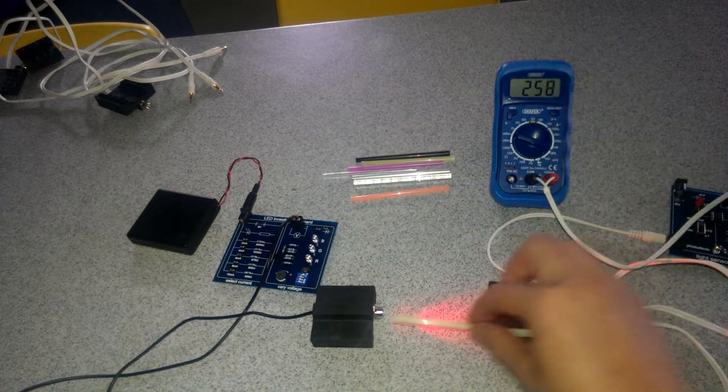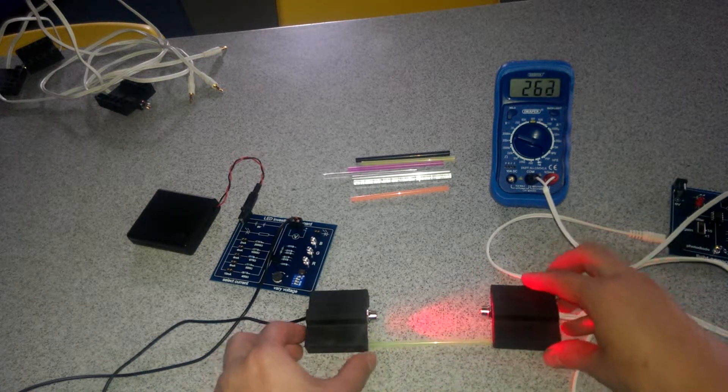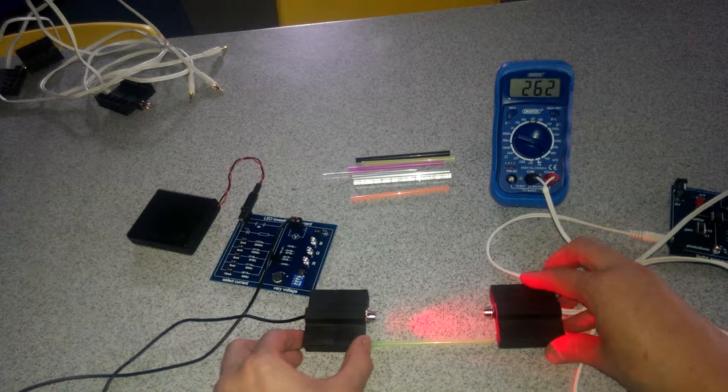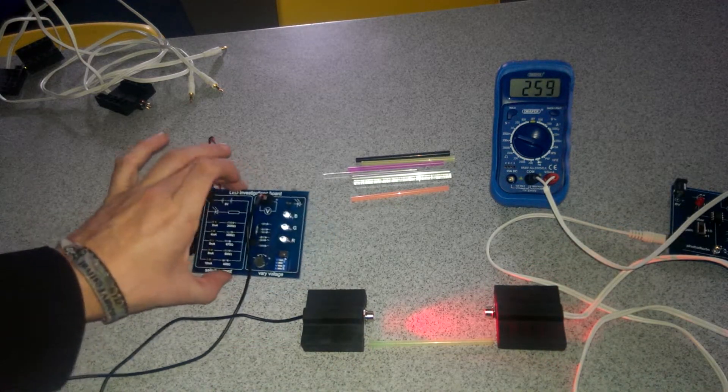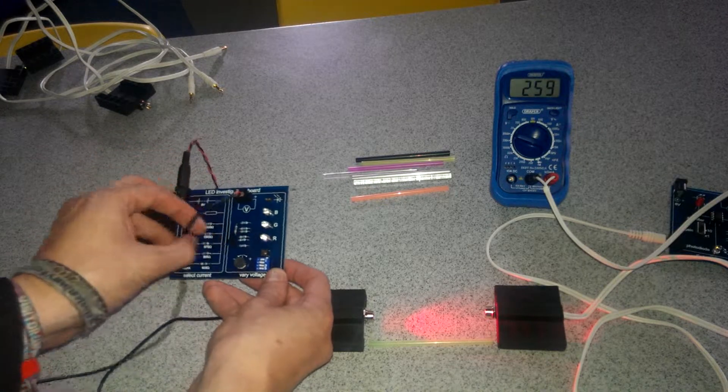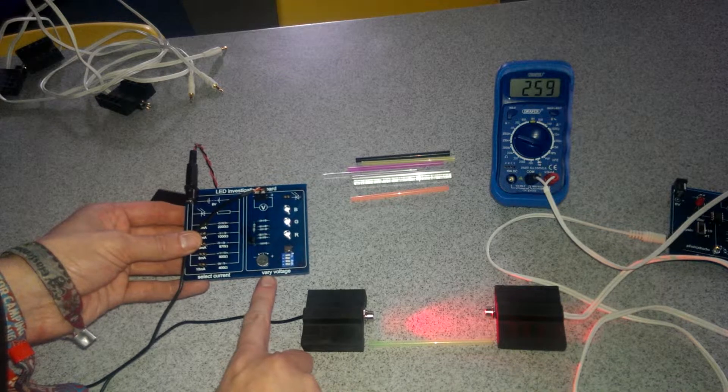First you take one of these straws, you place it in between the two emitters. You don't need to connect them yet. We just want them the right distance apart at the moment. Now what you must do is take your LED investigations board and look at this dial here. It says vary voltage.